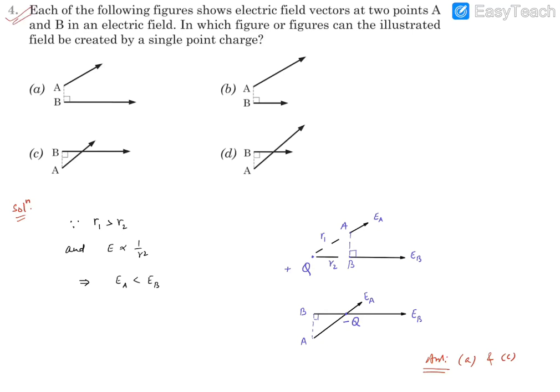Here is question number four. It reads that each of the following figures shows electric field vectors at two points A and B in an electric field. In which figure or figures can the illustrated field be created by a single point charge?